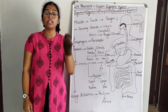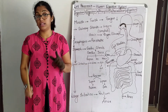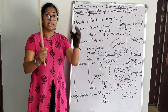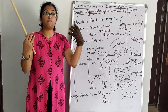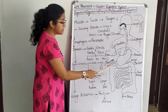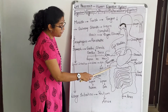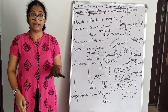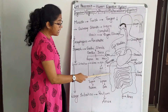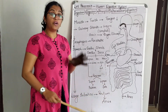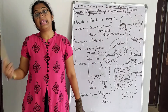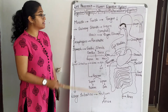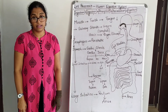The large intestine also has villi-like hair-like structures. As food moves through the large intestine, these structures absorb the excess water present. The food gradually becomes solidified. The undigested food is stored in the rectum for some time and then expelled out through the anus. This is the complete process of the human digestive system.